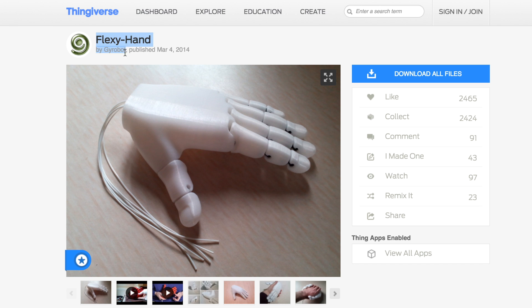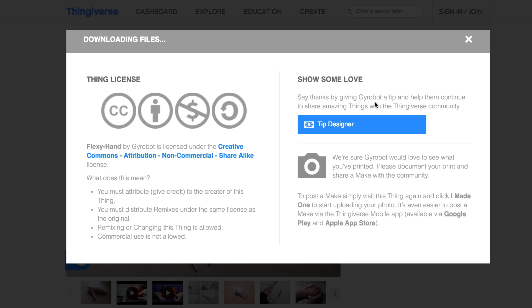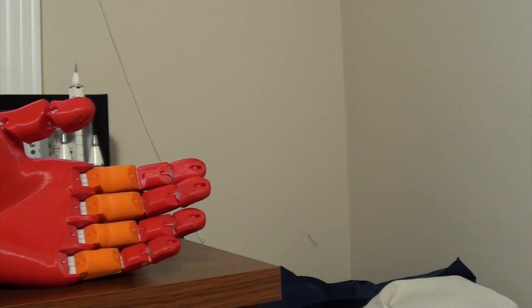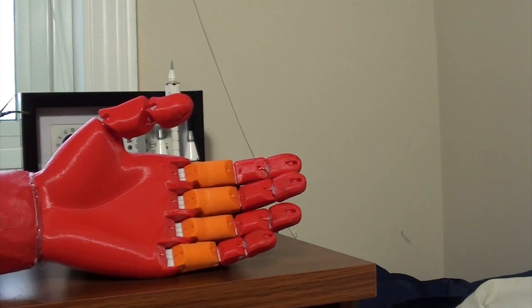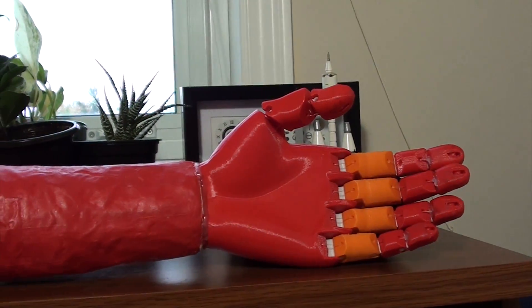The hand I am using is called FlexiHand. Credit for this design goes to Gyrobot. You can find the files for 3D printing on Thingiverse. I didn't have enough filament to 3D print the forearm, so instead I made a paper mache model of my own forearm and painted it red.